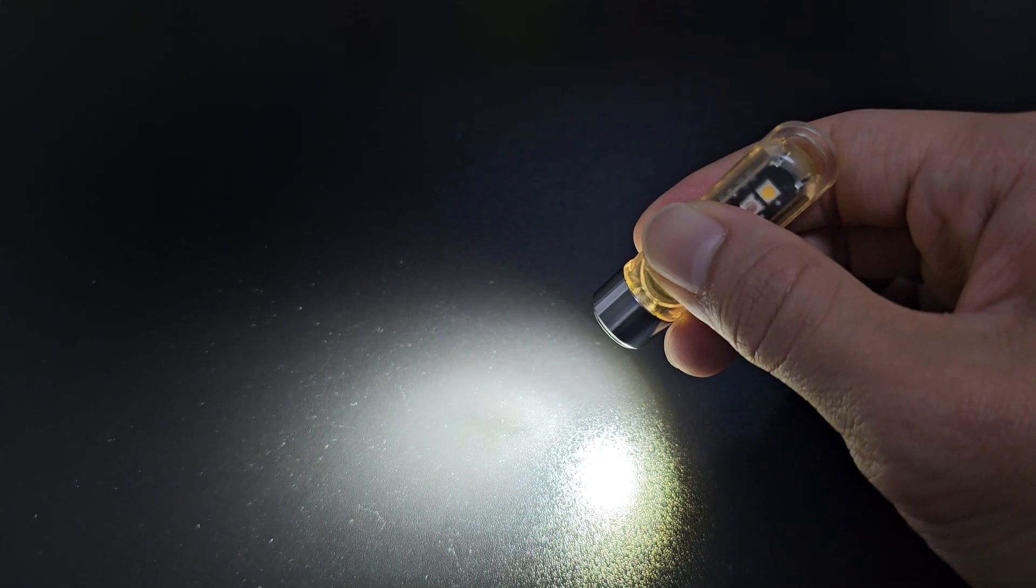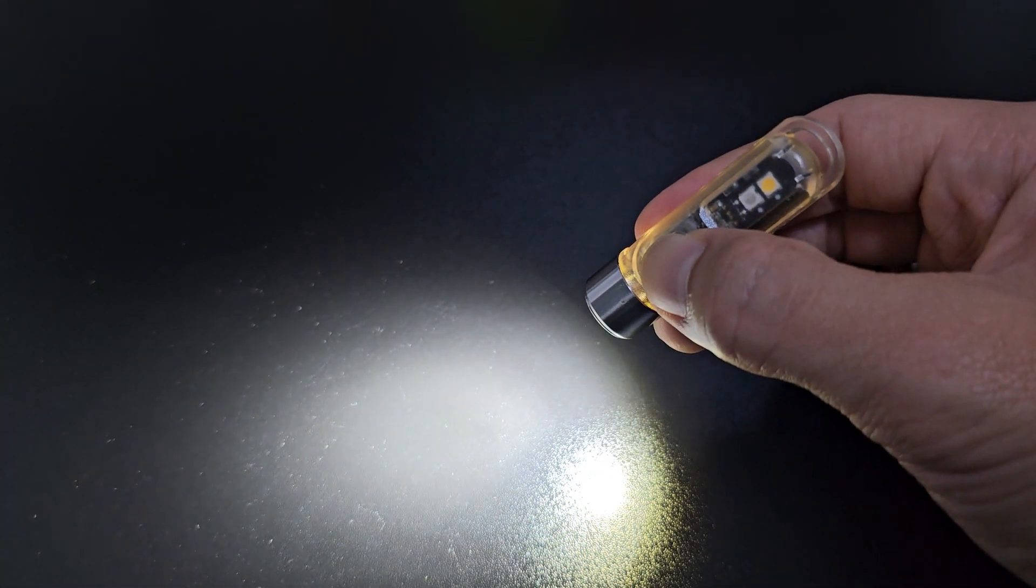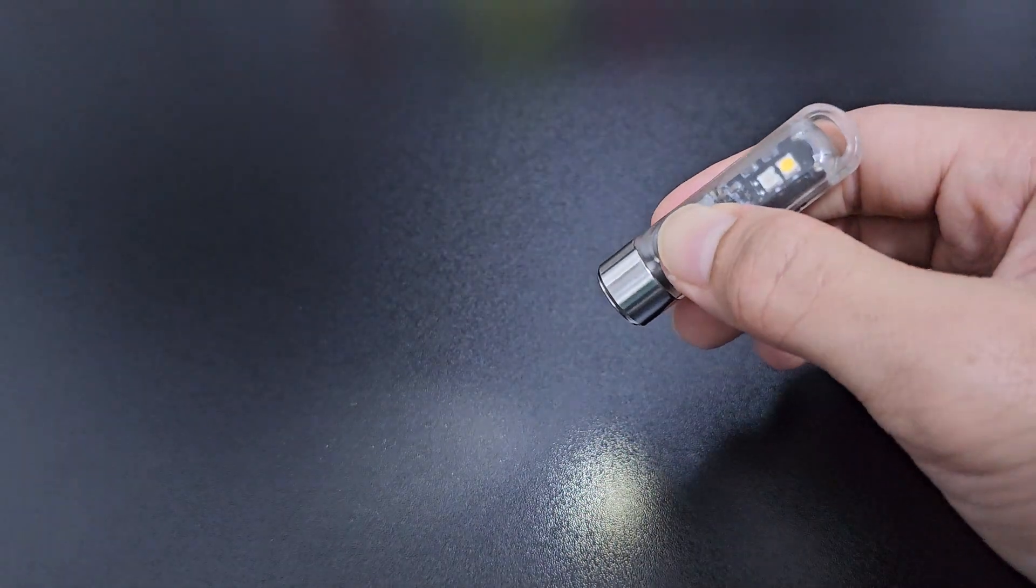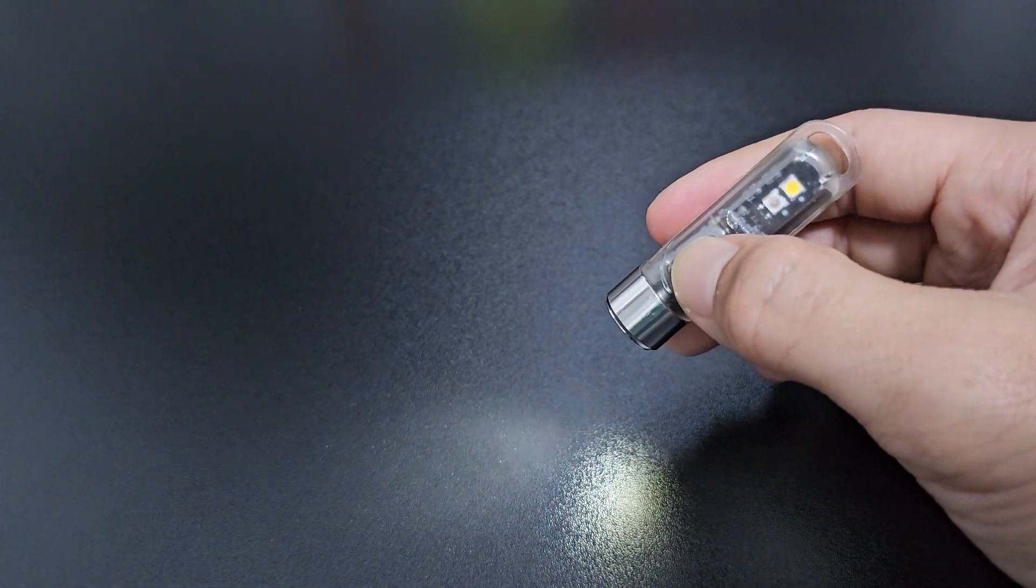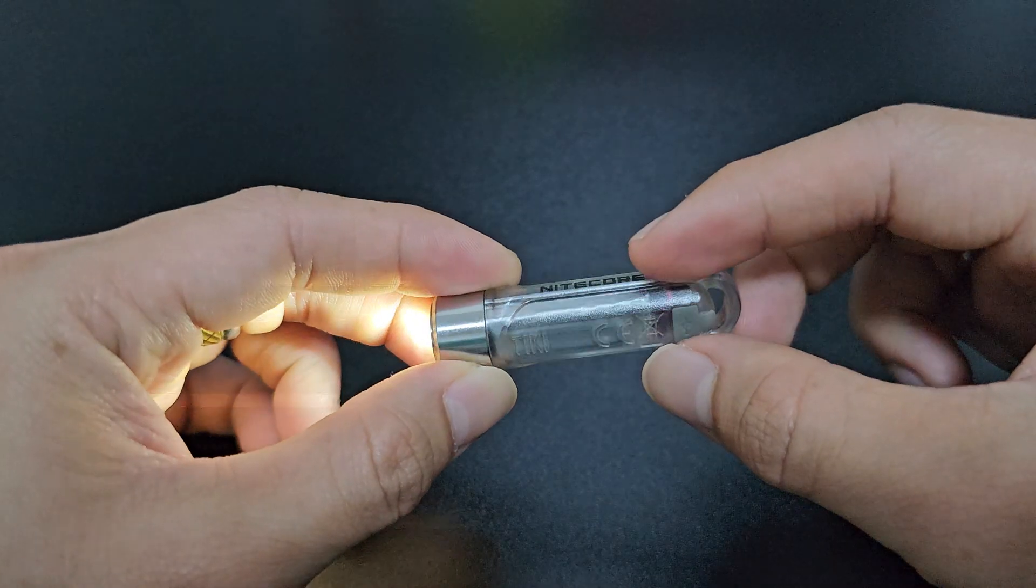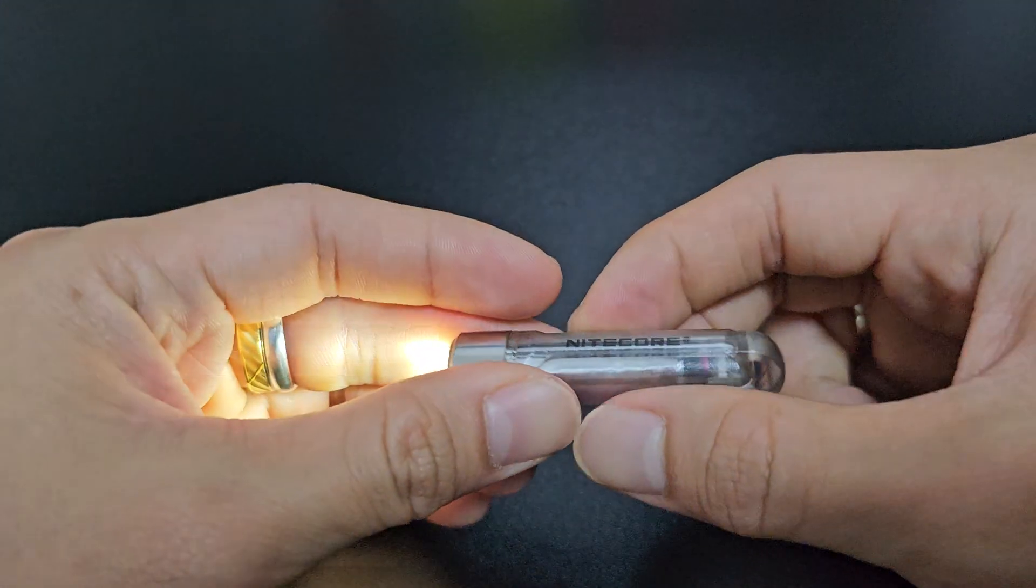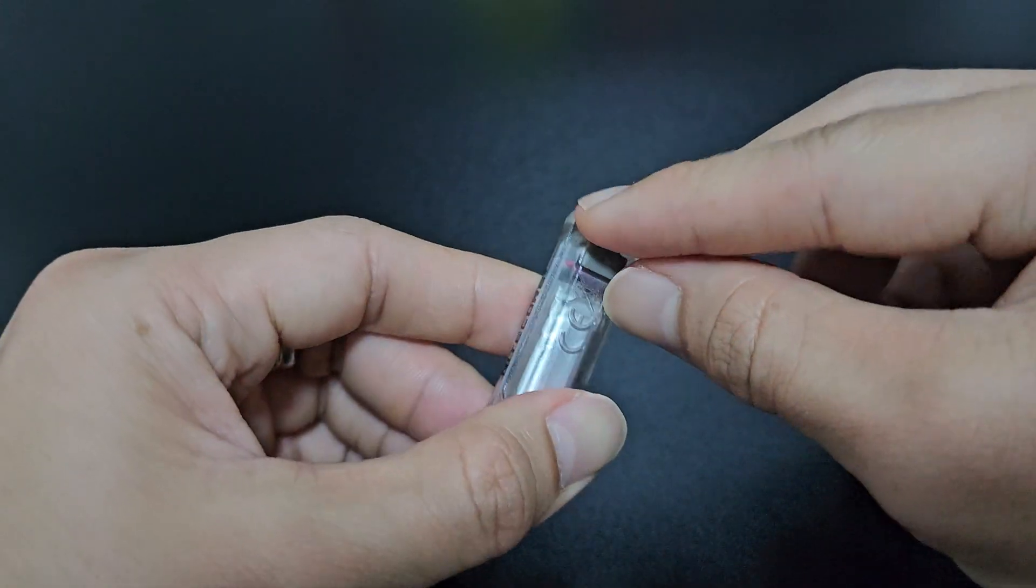The battery is over here. You can see this is a transparent casing, semi-transparent casing, and this light can be charged by using a micro USB charging port.